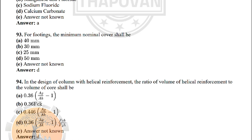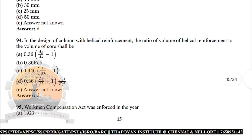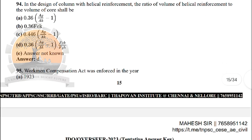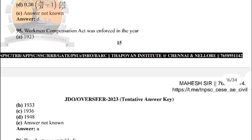Next: for footing, the minimum nominal cover shall be — the correct answer is option D: 50 mm. Next: in the design of a column with helical reinforcement, the ratio of the volume of helical reinforcement to the volume of core shall be — the correct answer is option D: 0.36 × (Ag/Ak − 1) × (fck/fy).